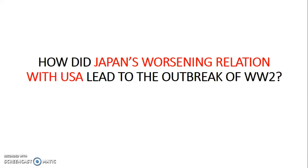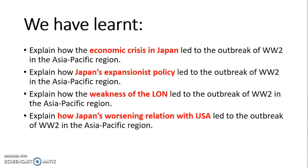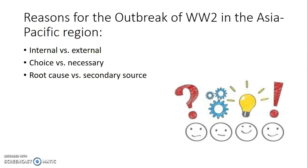How Japan's worsening relationship with USA led to the outbreak of World War II is quite self-explanatory. In essence, we have these four factors — the economic crisis, Japan's expansionist policy, the weakness of the League of Nations, and Japan's worsening relationship with USA — and that covers today's lesson.